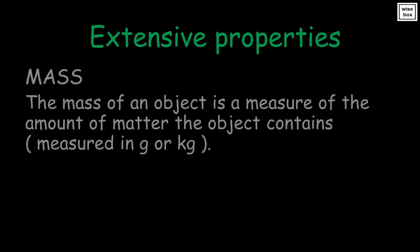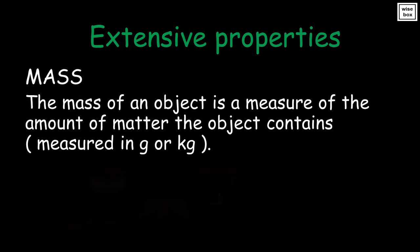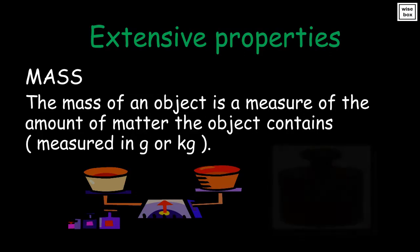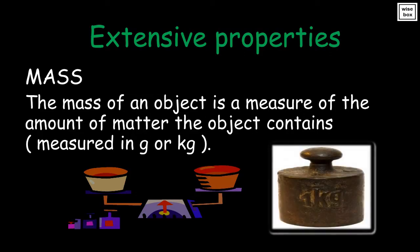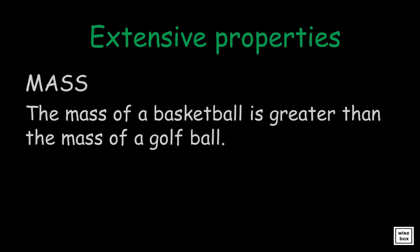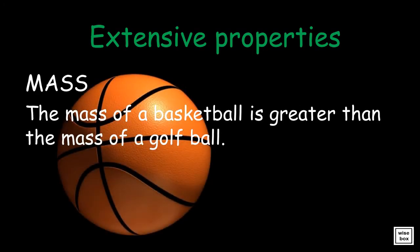The mass of an object is a measure of the amount of matter the object contains. The mass of a basketball is greater than the mass of a golf ball.